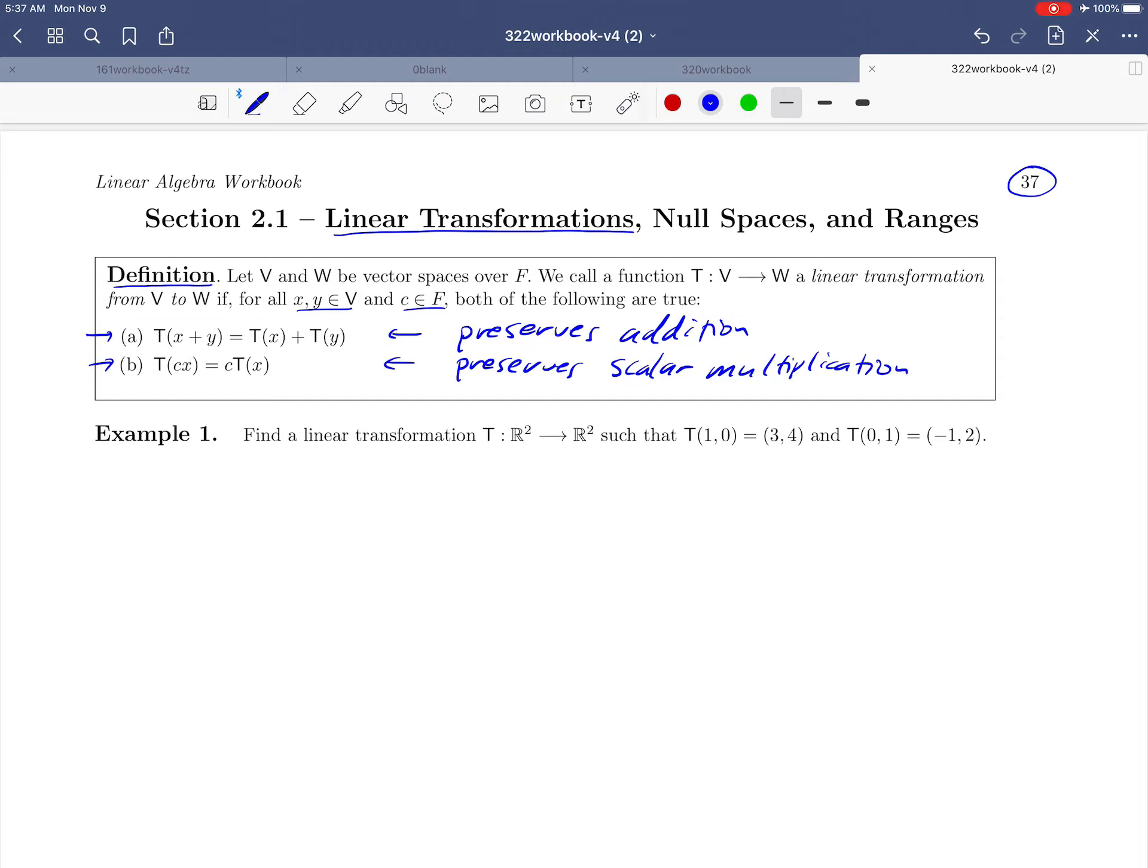So let's look at example one here together. It asks us to find a linear transformation T from R² to R² such that T of (1, 0) equals (3, 4) and T of (0, 1) equals (-1, 2). So basically, they're giving us two points. They're telling us that if we take (1, 0) and (0, 1) and substitute those in, we're going to get these two outputs.